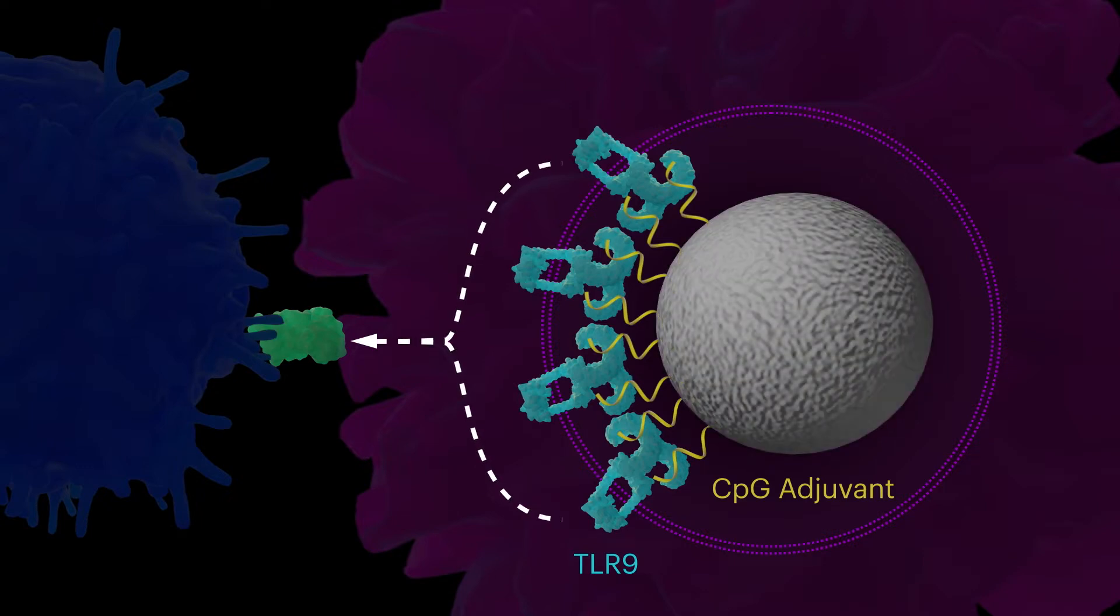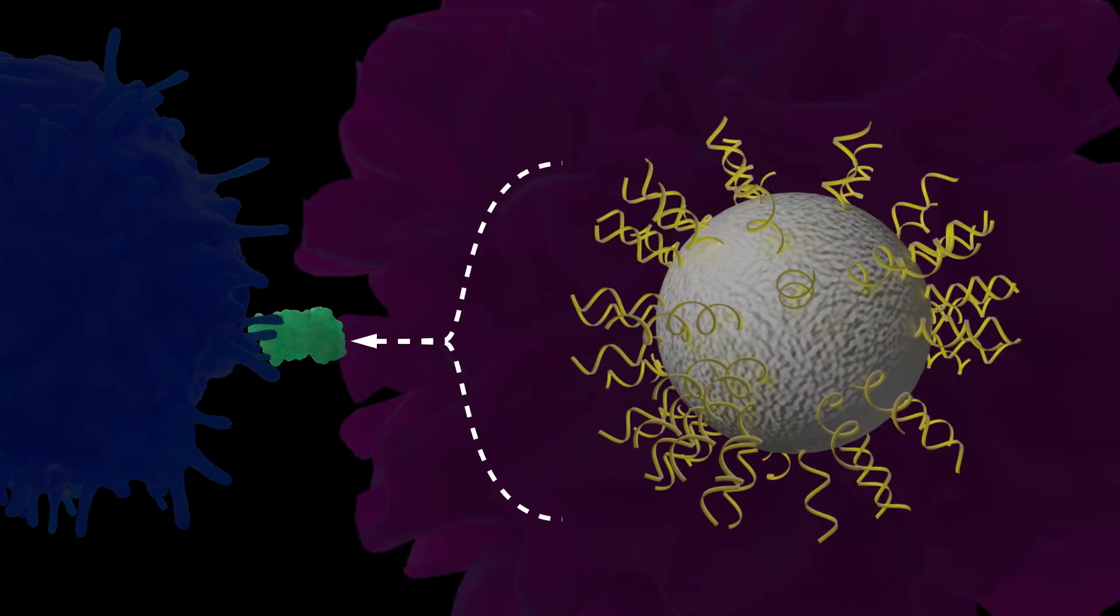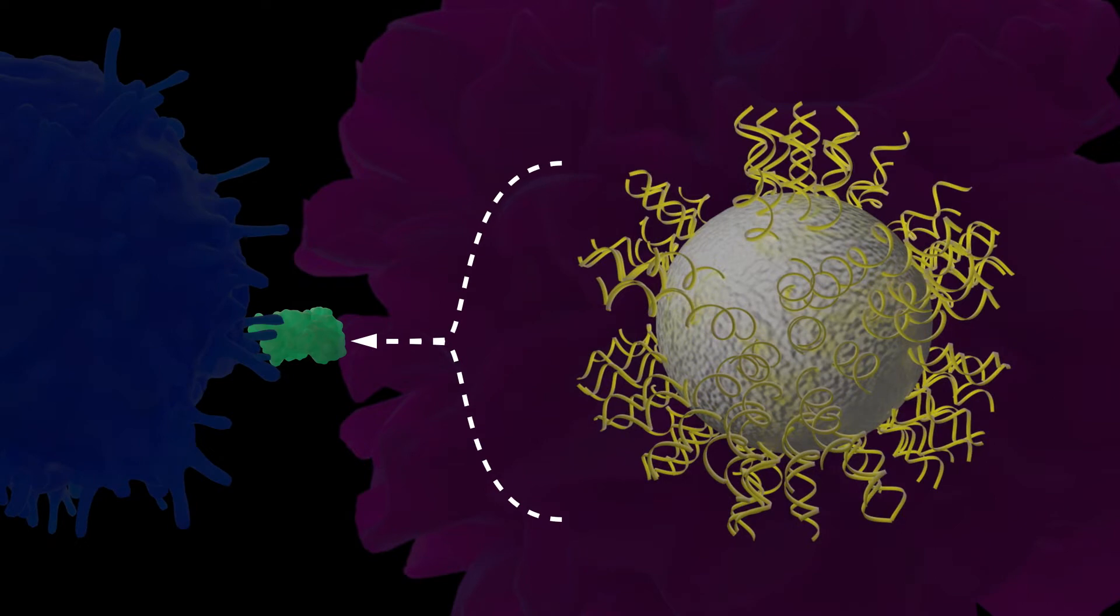very little is known about if, and how, specific spatial arrangements of CPG oligonucleotides affect the tumor cell-directed immune response.